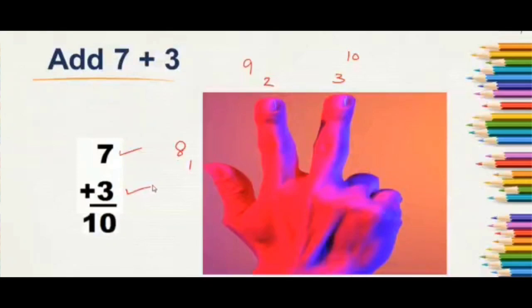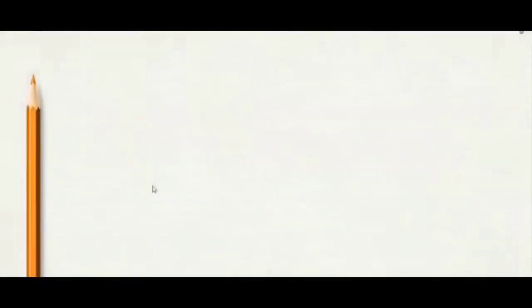Next, look at another example. Add 5 plus 5. Now, again we will write the numbers one below the other vertically. So, both are 5. So, we will keep one number in the mind and one number in the fingers.